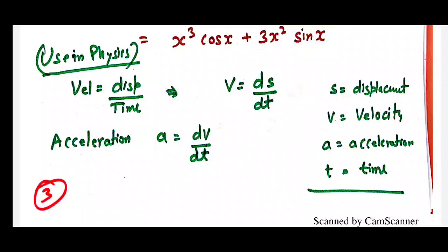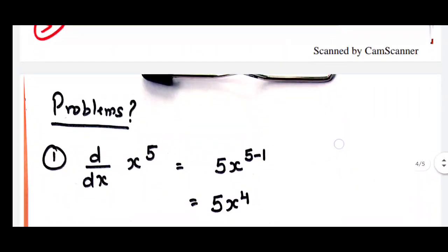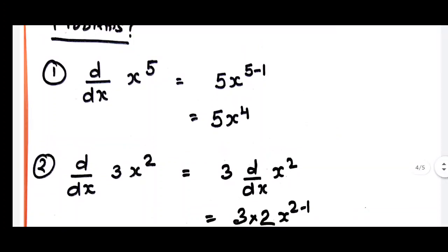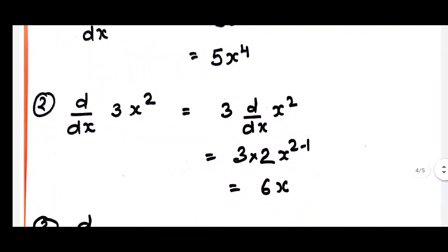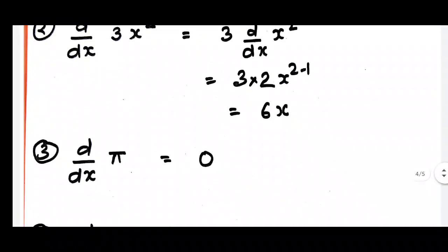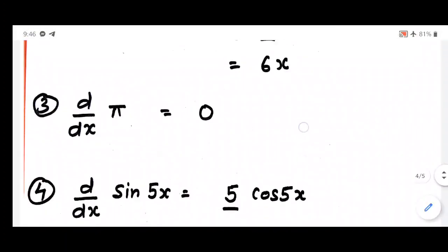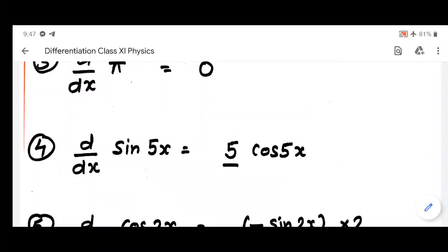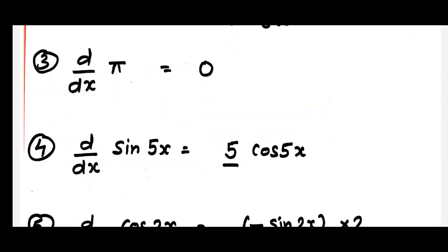After watching these videos, I have given some problems — try to solve them. Now some quick solved examples: d/dx of x to the power 5 — applying the x to the power n formula gives 5x to the power 4. d/dx of 3x squared — 3 is a constant, taken out, giving 3 times d/dx of x squared, which is 3 times 2x equals 6x. d/dx of pi — pi is a constant, so you get zero. d/dx of sin 5x — first differentiate sin 5x to get cos 5x.